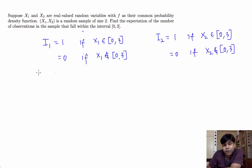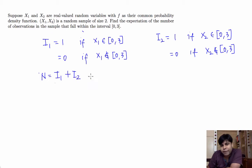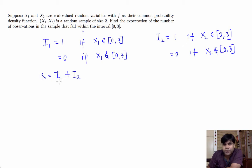We are interested in the expected value of N, where N is i1 plus i2. Notice that N will take value 2 if both i1 and i2 are 1, meaning both x1 and x2 are between 0 and 3.